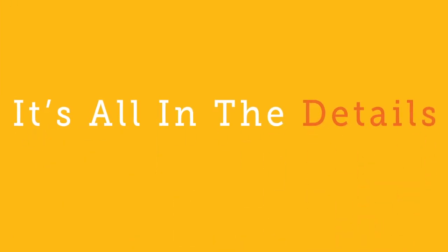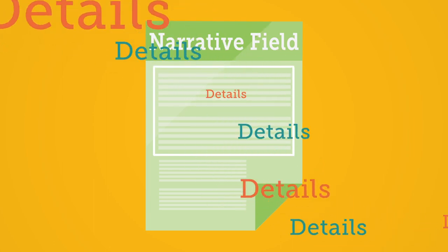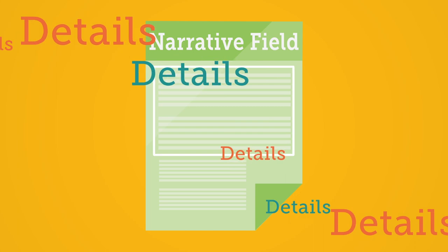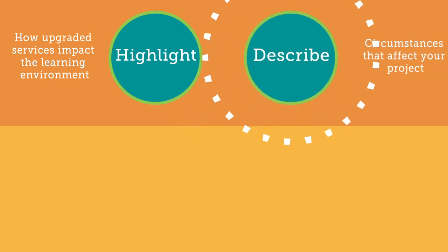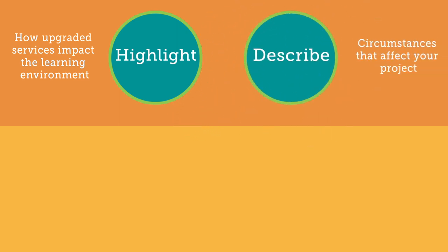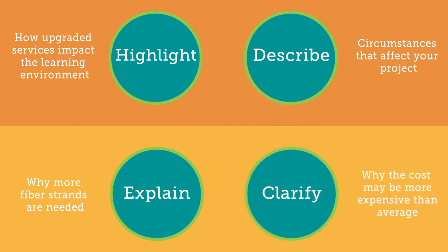It's all in the details. It is better to be overly descriptive in the narrative field than not — more information will heighten your chances of receiving what you have requested. In the narrative, highlight how the upgraded services will impact the learning environment. Describe any out-of-the-ordinary circumstances that affect your project. Explain why more than the usual number of fiber strands are needed, and clarify why the cost of the project may be more expensive than average due to distance, terrain, etc.